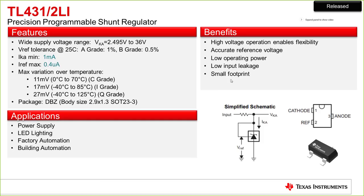A key spec of these new devices is the IRef pin current — the current into the adjust pin of the shunt reference. This is 10x lower than existing generations at 0.4 µA versus 4 µA max in the original TL431. Most other specs are the same as the legacy products, but this reduced reference pin current gives you higher system-level accuracy.